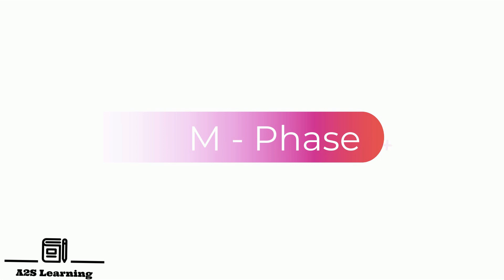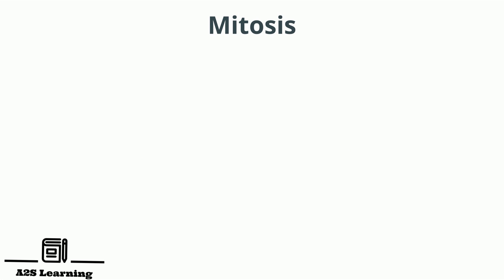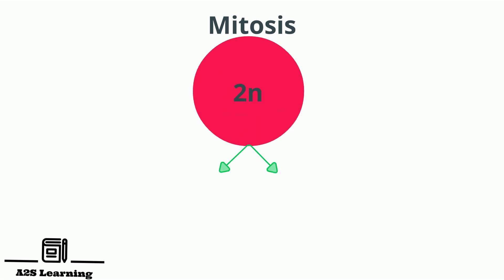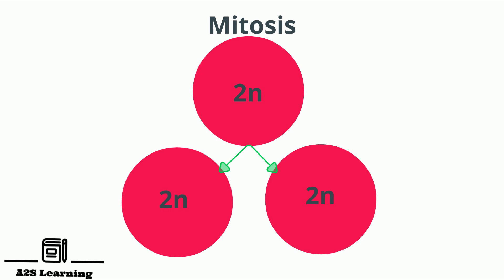M phase, M stands for mitosis or meiosis. In this video, we will study about mitosis. Since the number of chromosomes present in the parent cell and daughter cells are the same, it is also called equational division.